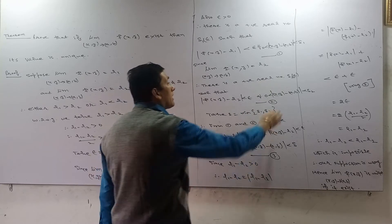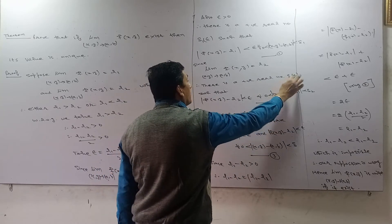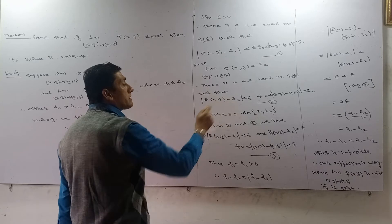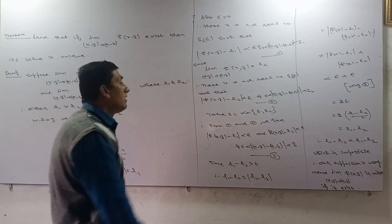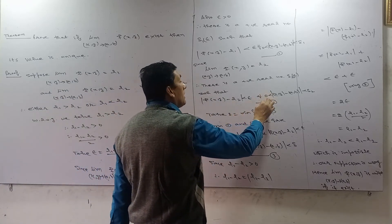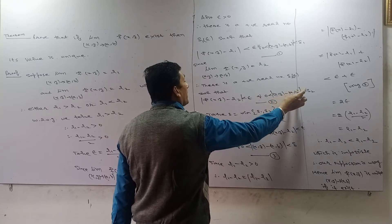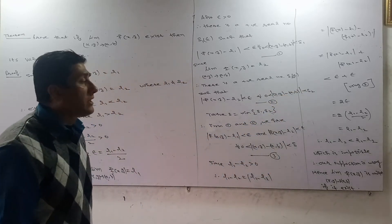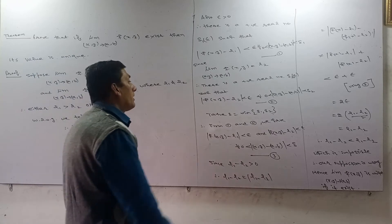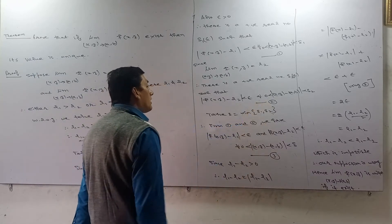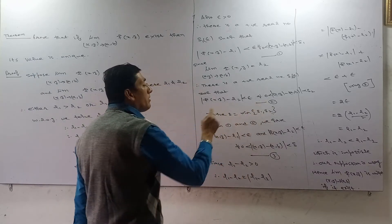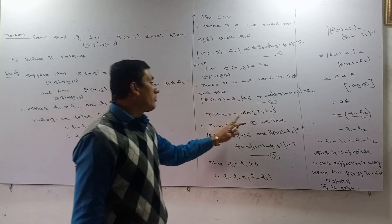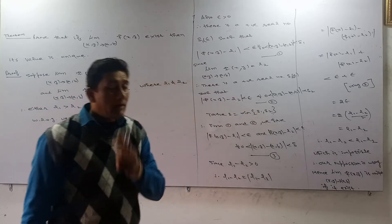Similarly, |f(x, y) minus L2| is less than epsilon for all 0 less than |(x, y) minus (a, b)| less than delta 2. Now, we take delta equal to minimum of delta 1 and delta 2.